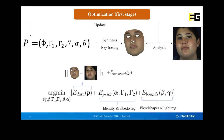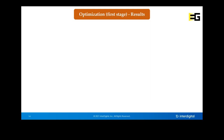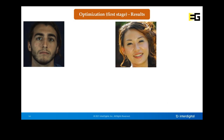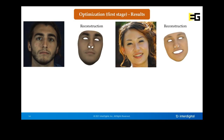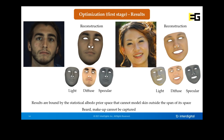The energy function we minimize has a data term composed of a photoconsistency term — the L1 norm between the ray-traced image and the input image — and a landmark term. We add regularizers to maintain stability and remove implausible faces from the 3DMM. However, the final reconstruction at this stage is still far from the real input image, because we are bound by the statistical albedo prior space, which cannot model skin attributes like beard or makeup outside its span.